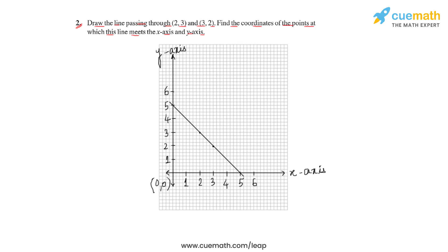we'll get a line like this where this point represents (3,2), the point three comma two, and this point represents the point (2,3), two comma three.